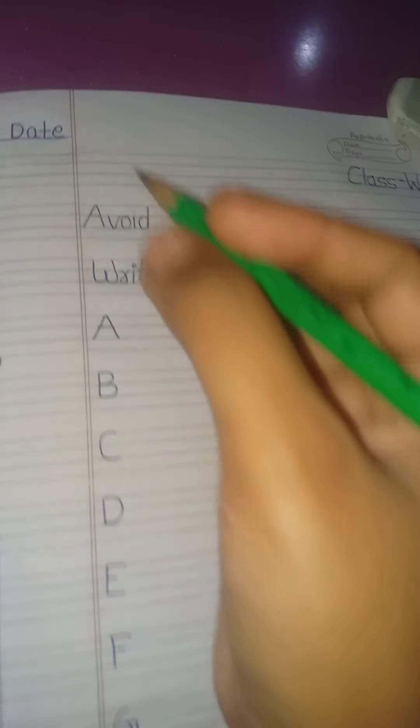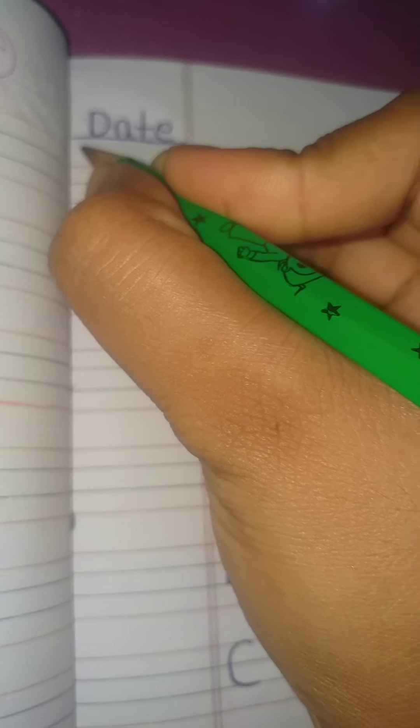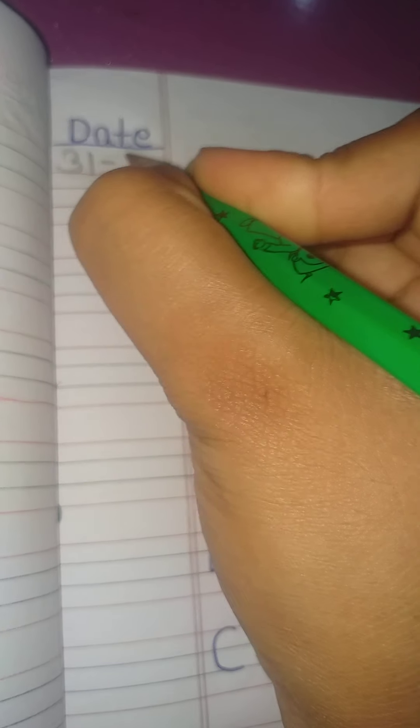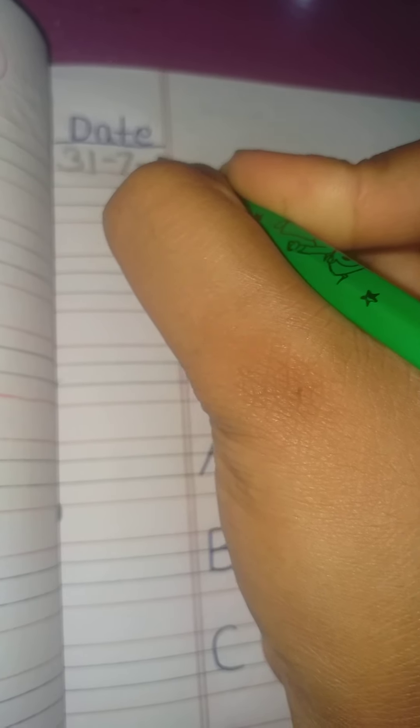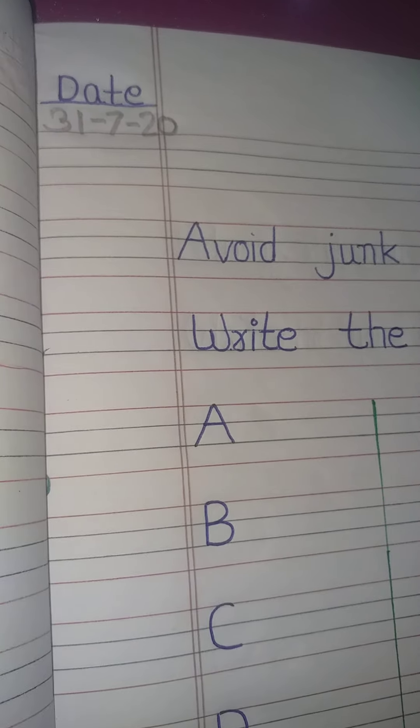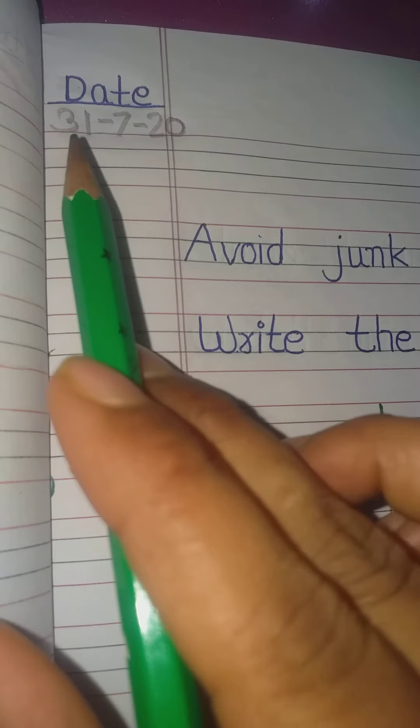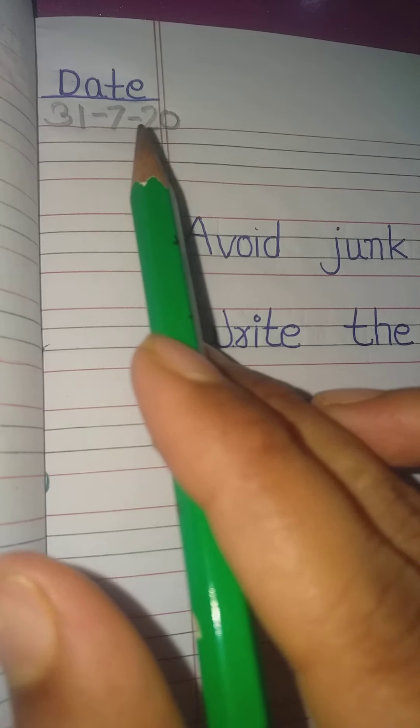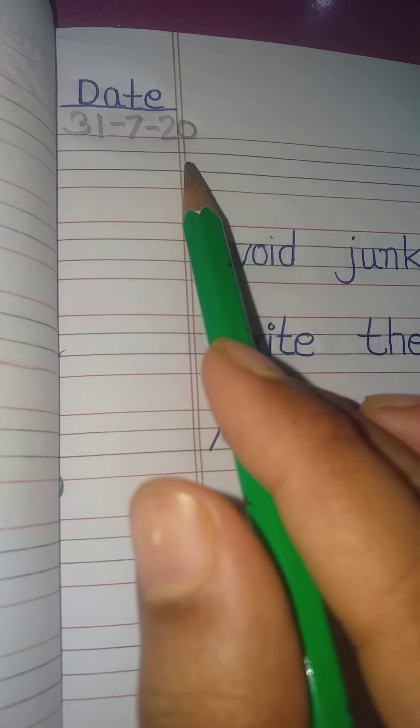First of all, write a date. Today's date is 31-7-2020. After completing the date, come to the first line.